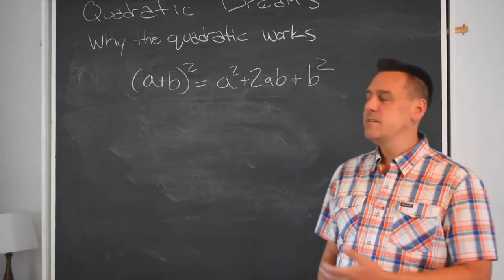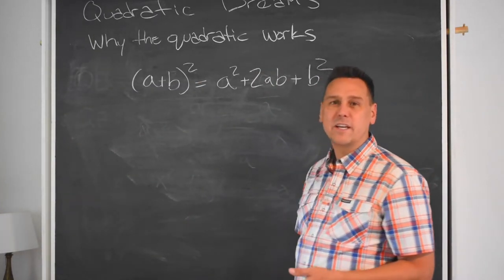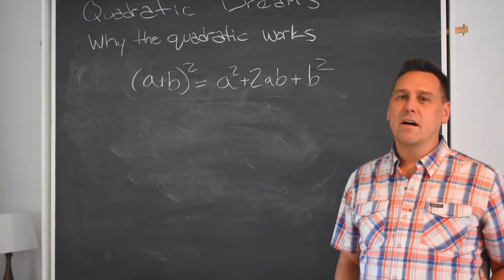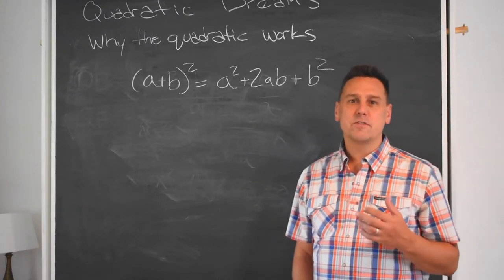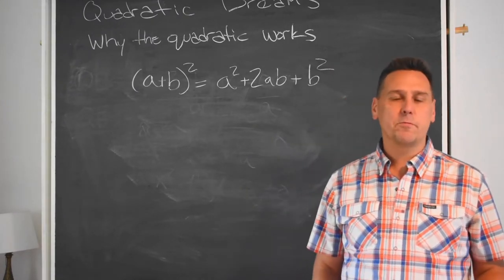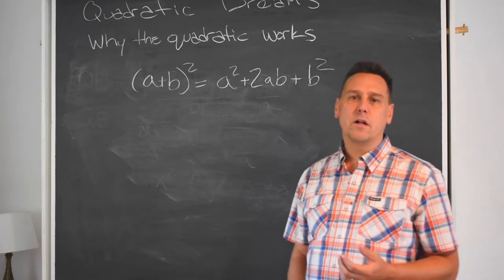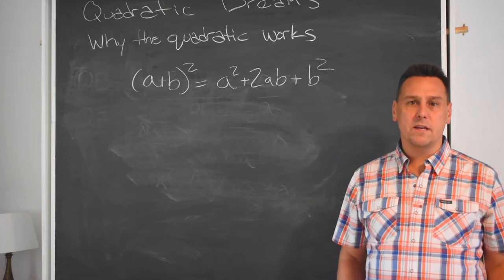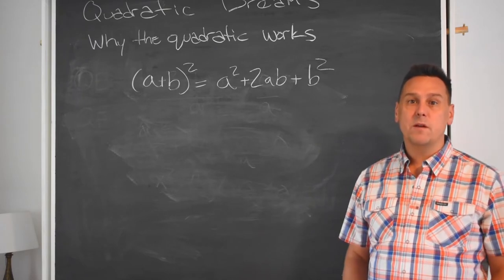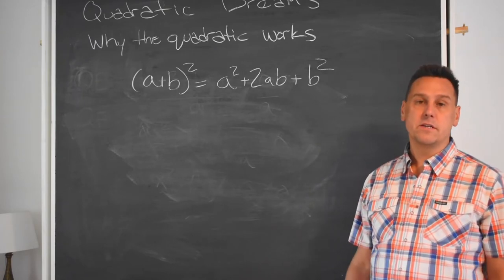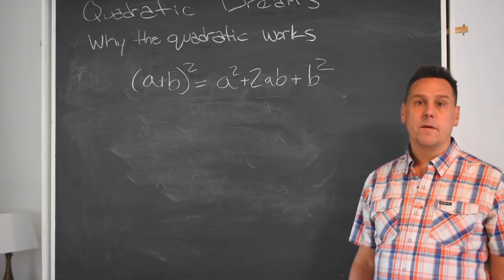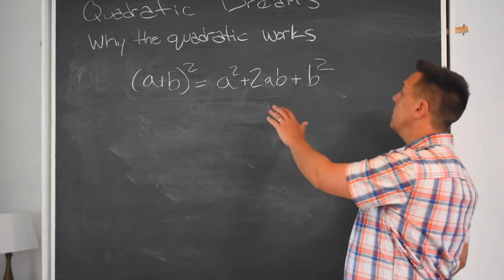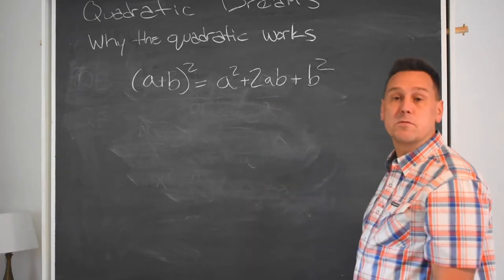Some people say that the reason why this works is something called foiling, first, outside, inside, last. Others are pedantic and refuse to call it anything other than the distributive property. Regardless of what you call it, though, this situation comes up time and time again. And it's just what we mean when we're talking about multiplication and addition being mixed together. This specific form here even has a name. It's called sum of squares.